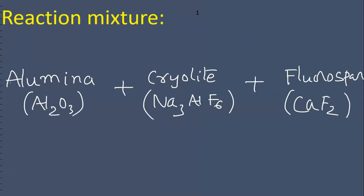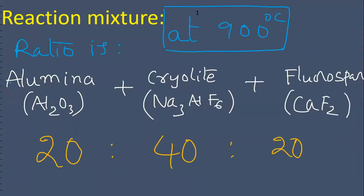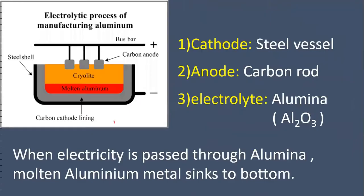Reaction mixture: Alumina plus cryolite plus fluorspar mixture is taken. What is the ratio? 20:40:20. At what temperature? 900 degrees centigrade.